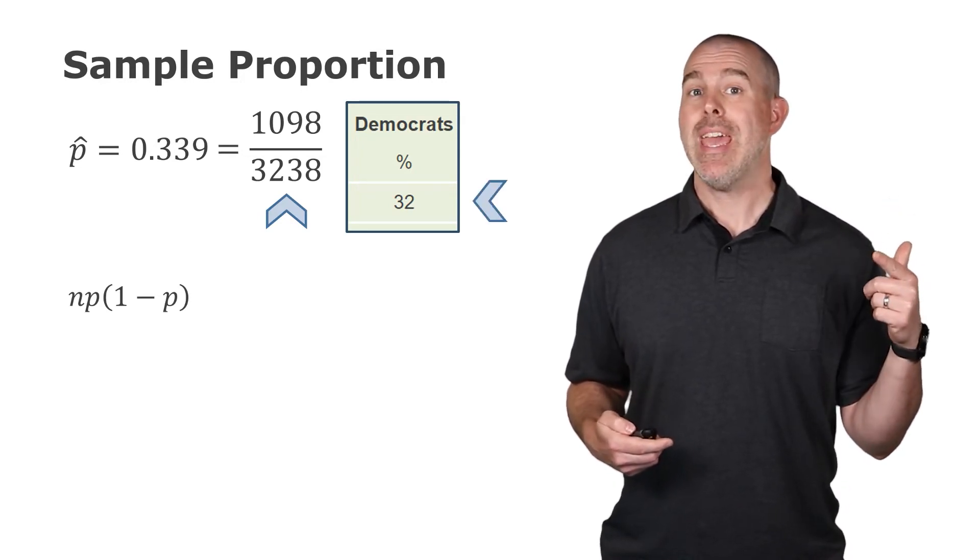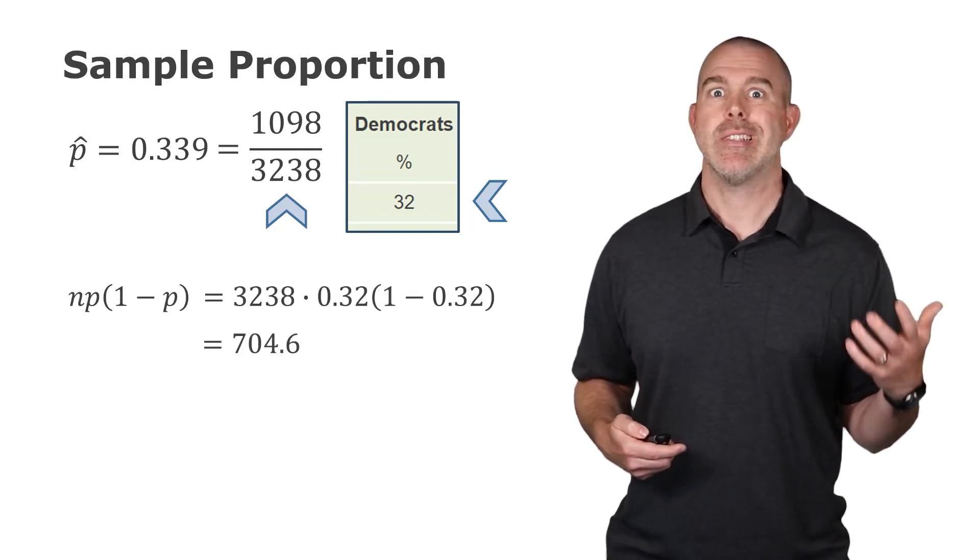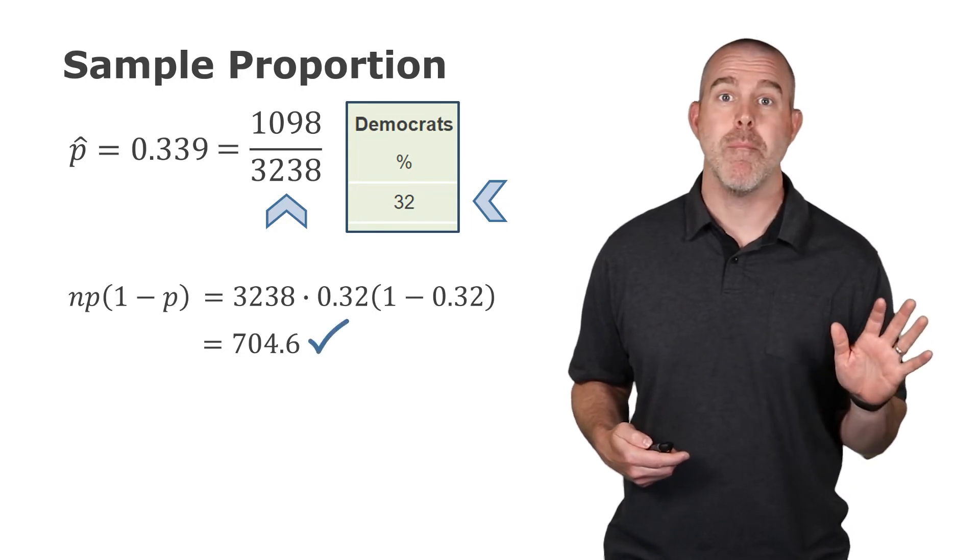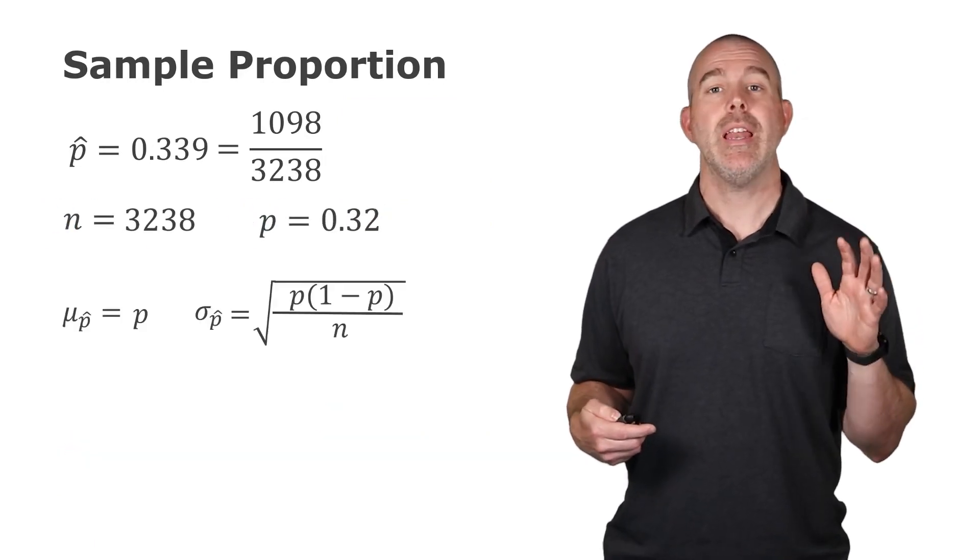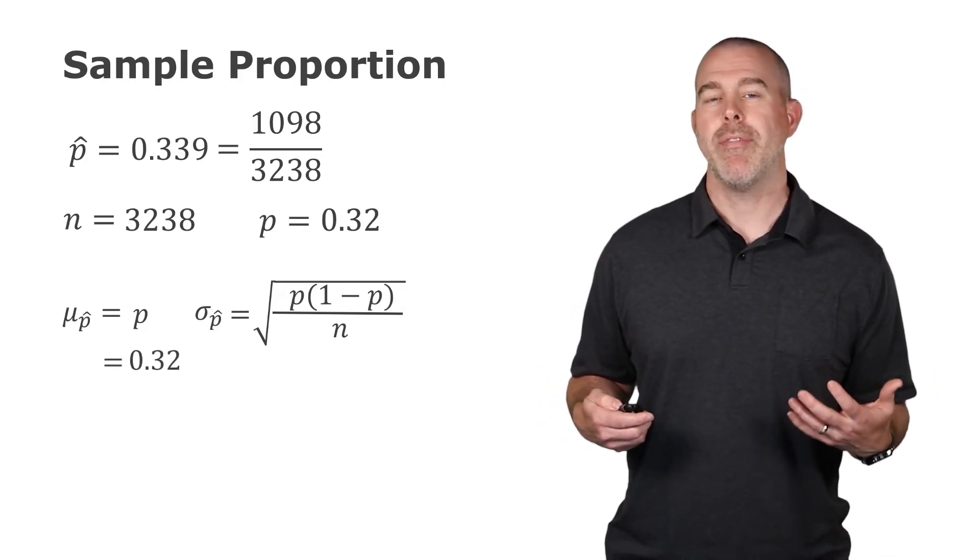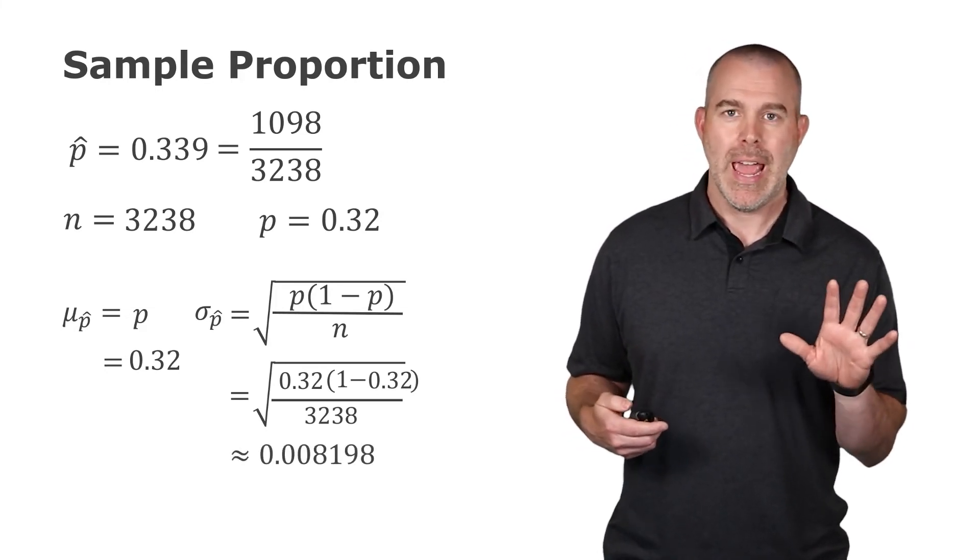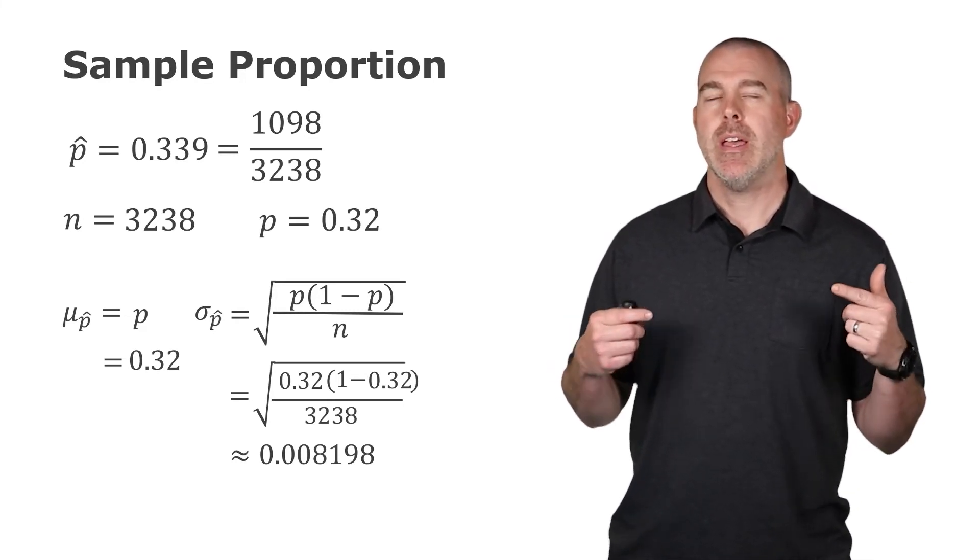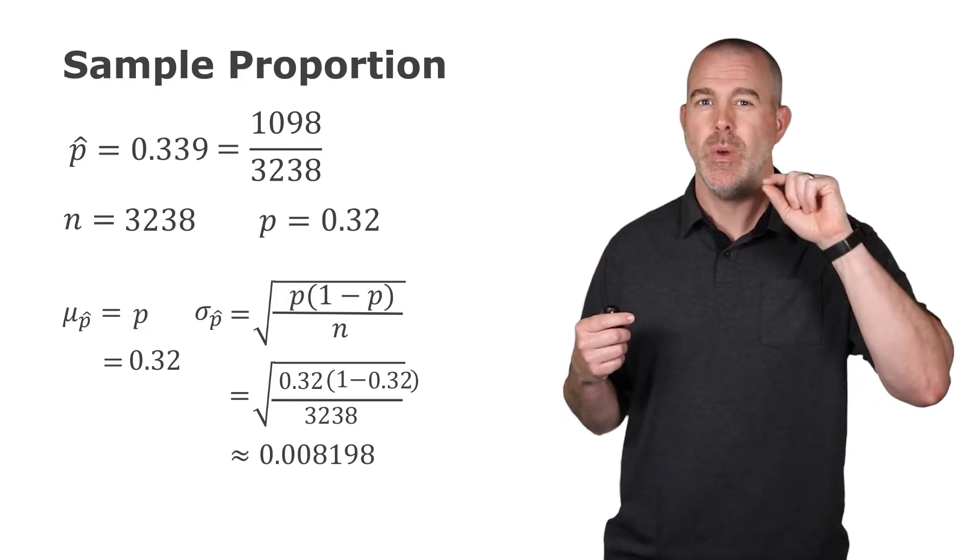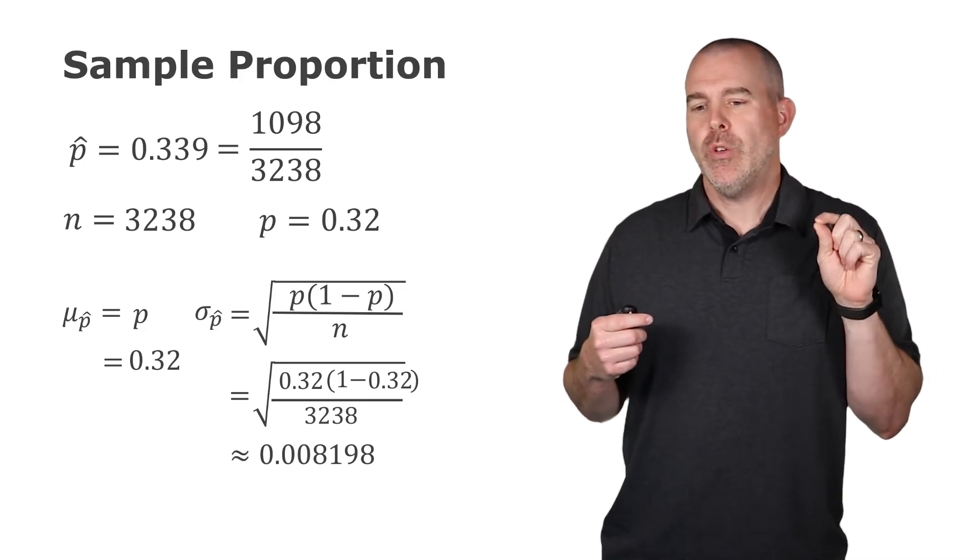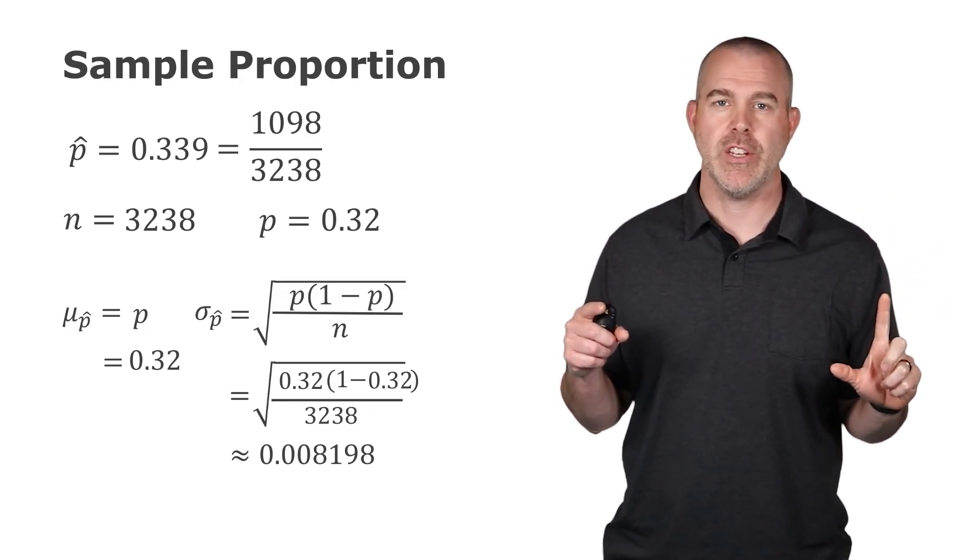N times p times 1 minus p. Plug in our values. We have n, 3,238. The p, the population proportion, is 0.32. That's what we're comparing with. That's what we're assuming is true. We could calculate that. We get 704.6. Clearly, we have met that criteria. That means our distribution will be that normal distribution. And calculating the mean and standard deviation, plugging in all of our values, we have the mean should be 0.32. The standard deviation, doing that computation, should be about 0.008198. Now, it might seem a little excessive. Why am I writing so many digits? It has to do with how these normal probabilities are calculated. Remember, the z is x minus μ divided by σ. So when you divide by a number, you don't want to round it very much because it can affect your results. So write lots of digits out here for the standard deviation of p-hat.